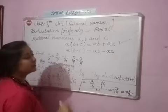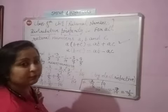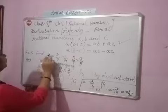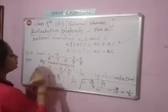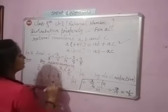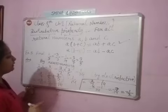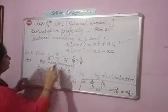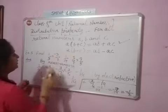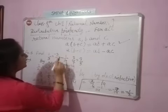We will discuss now. Look at example number 5: find 2/5 multiply minus 3/7 minus 1/14 minus 3/7 multiply 3/5.